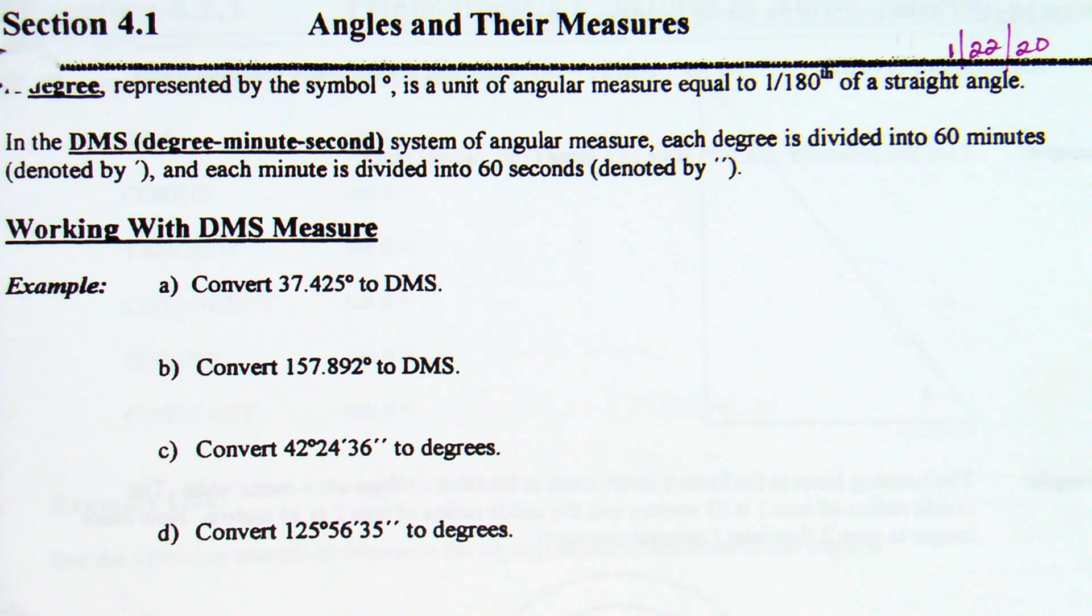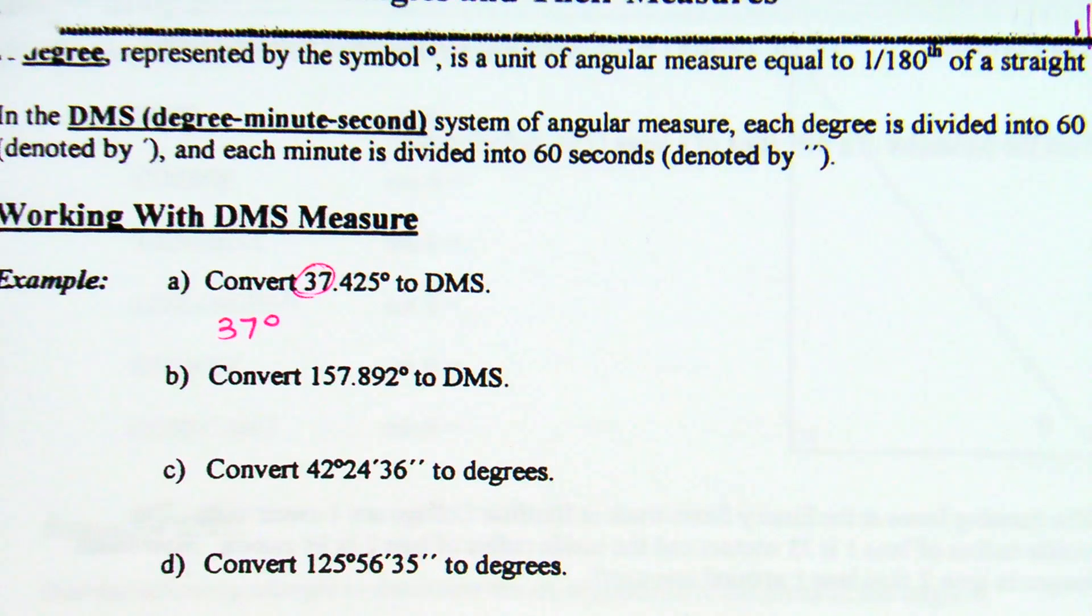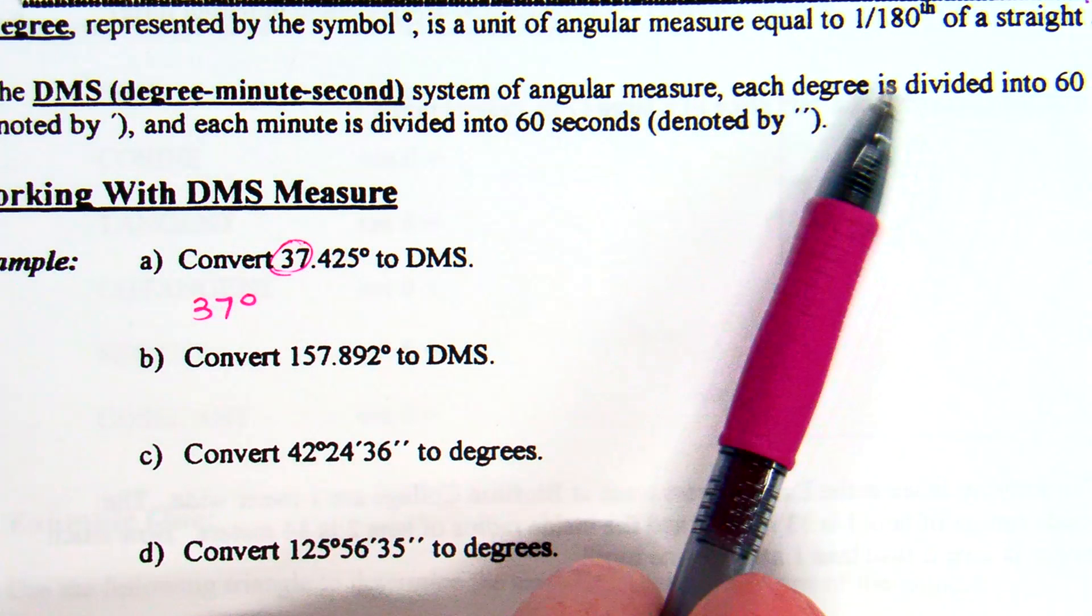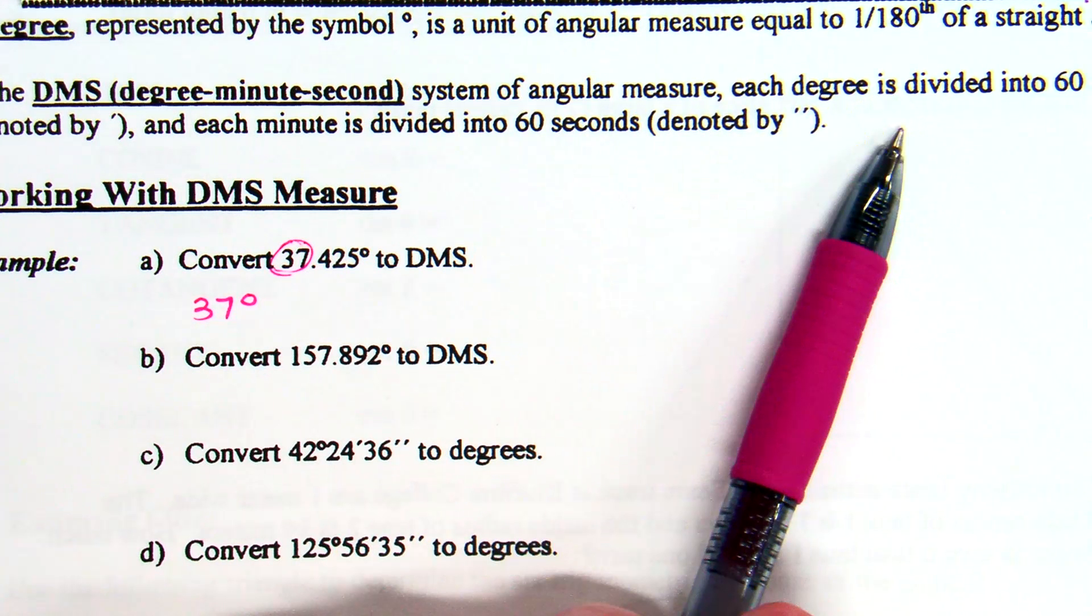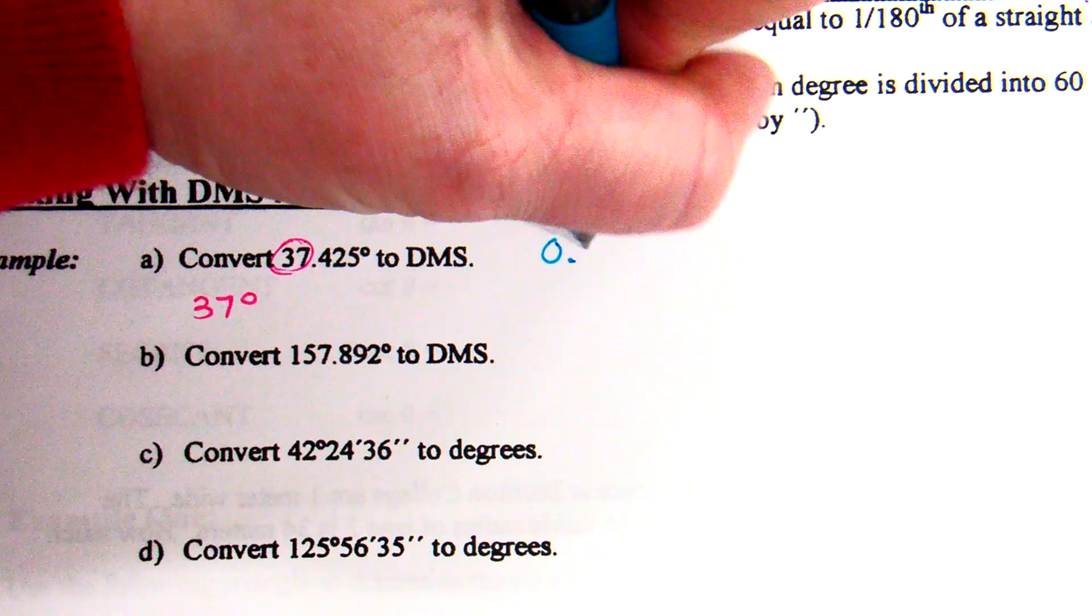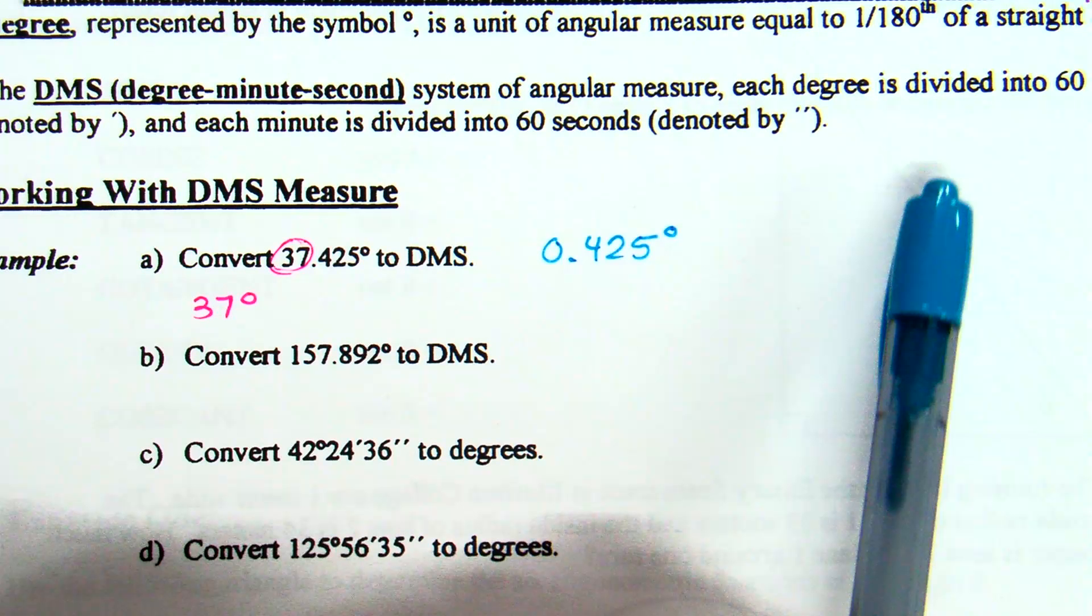If we're trying to convert this to degrees, minutes, and seconds, the first thing we know is how many whole degrees do we have? We have 37 degrees. So the first part of my answer is 37 degrees. Now we currently have 0.425, so 425 thousandths of a degree. And we're trying to change that, first and foremost, to minutes.